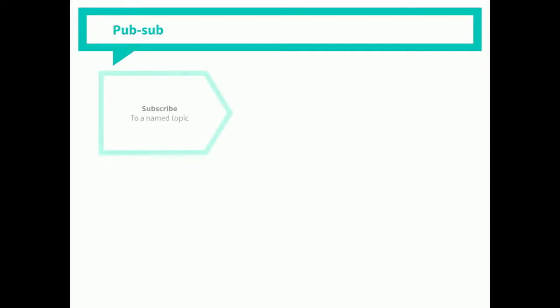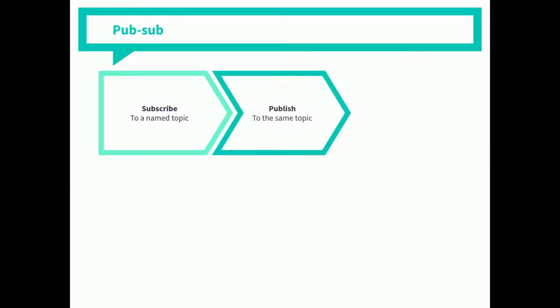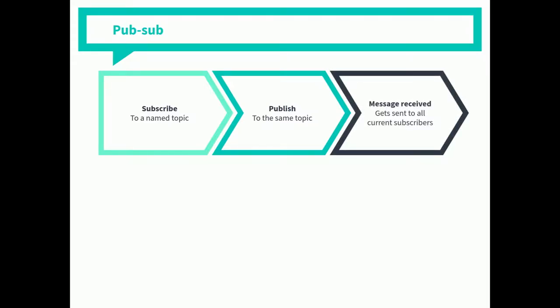WAMP has two main features. The first is PubSub — publish and subscribe. For anyone who's used something like an event bus, this might be familiar. You subscribe to a named topic — it's just a string, just a name. The WAMP protocol doesn't say you have to subscribe to a topic that already exists; by subscribing, it now exists. You can then publish to the same topic, and the message is relayed by the router to everyone else subscribed. It's a really simple architecture.